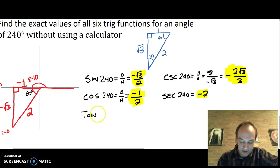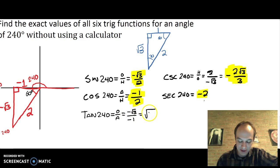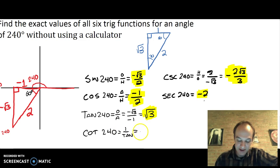And tangent of 240°. That is going to be opposite over adjacent, or negative square root of three over negative one. Here, watch those negatives. The negatives reduce to one. The one doesn't need to be written when it's on the bottom. So the final answer is just positive, excuse me, positive square root of three. And cotangent of 240° is one over tangent. So that's going to be one over square root of three, which you do have to rationalize. That's going to be square root of three over three. Final answer.